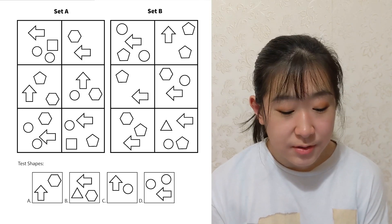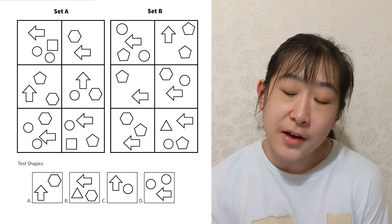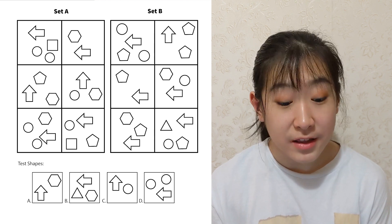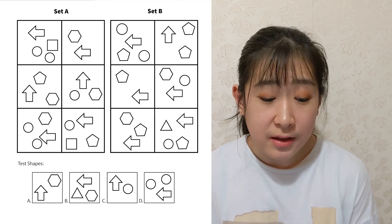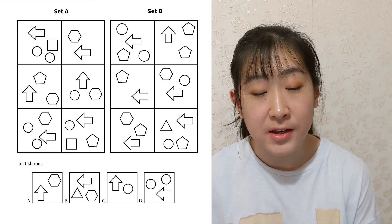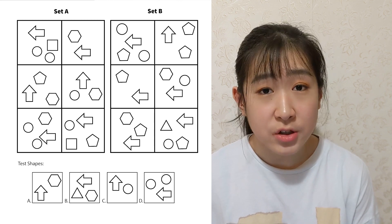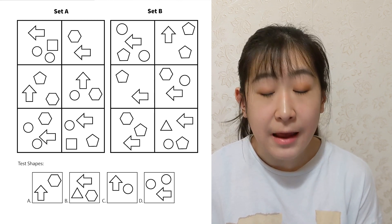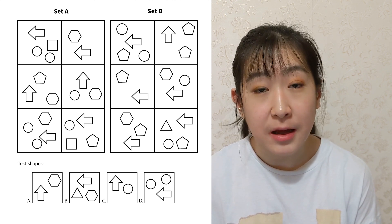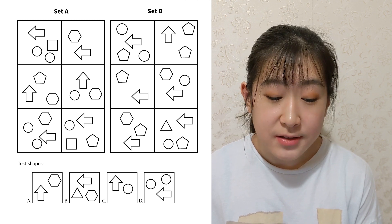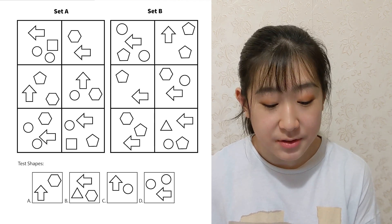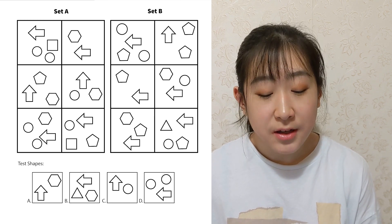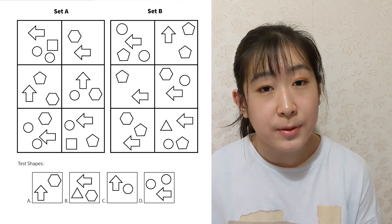That was quite a tough question — massive congrats if you got it. The second question gives four different shapes and you have to say whether they fit set A, set B, or neither. The number of shapes is again different in every panel, so we can't use that. Since all shapes are the same colour, colour isn't relevant — it's most likely something to do with the number of sides. There's also one arrow in every single panel, which signals the pattern is about the arrow. In set A, the arrow points left when there are an even number of sides on the other shapes, and points upwards when there are an odd number of sides. The opposite is true in set B — meaning the first two test shapes should be in set B and the last two in set A.